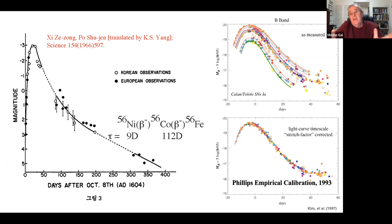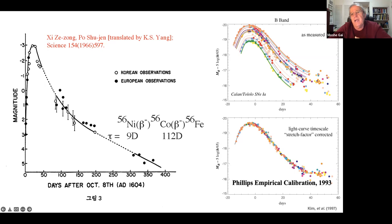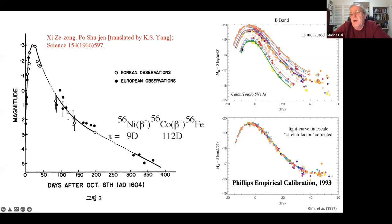If we know how much nickel-56 we have, we should be able to predict the brightness - but we are off by about a factor of three. All supernovae in our immediate neighborhood (within 100 million light-years) show the same behavior within a factor of three in intensity. The magnitude (a more negative number means brighter) rises over time.